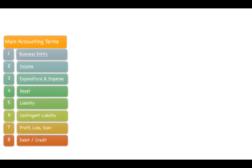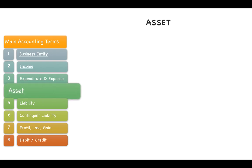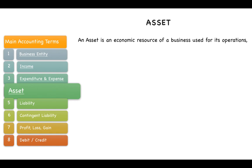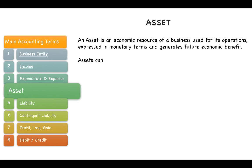The next term is asset. An asset is an economic resource of a business used for its operations, expressed in monetary terms, and generates future economic benefit. Assets can be broadly classified into two types.